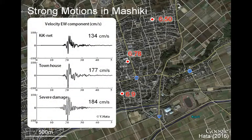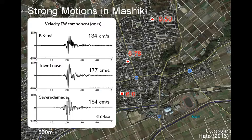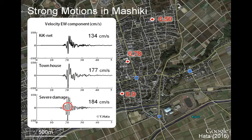Here are the velocity waveforms recorded at these stations. The EW component is the largest component. At the Kik-net station, the maximum velocity was 130 cm/s. At the town hall and the severely damaged region to the south, the maximum velocity was 180 cm/s — very large. The waveform shape is quite different: the severely damaged region shows multiple pulses, while the town hall shows just a single large pulse. These multiple pulses were probably amplified by the subsurface soil structure in the severely damaged area.